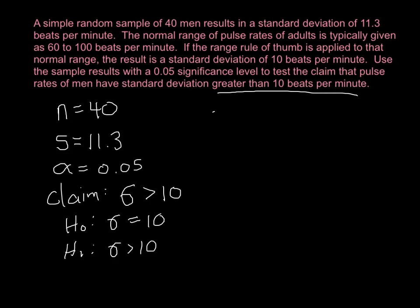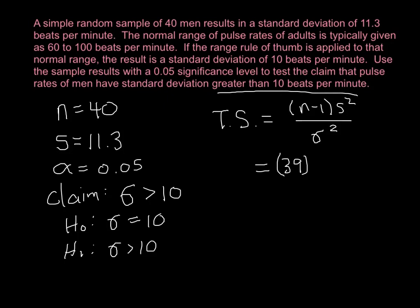I have everything I need except for my test statistic. My test statistic is the formula n minus 1 times s squared over population standard deviation squared, or population variance. So if I plug numbers into the formula, n minus 1 is 39 — that's my degrees of freedom. Take it times s squared and divide it by 10 squared. We punch that in our calculator and come out with a test statistic of 49.799.